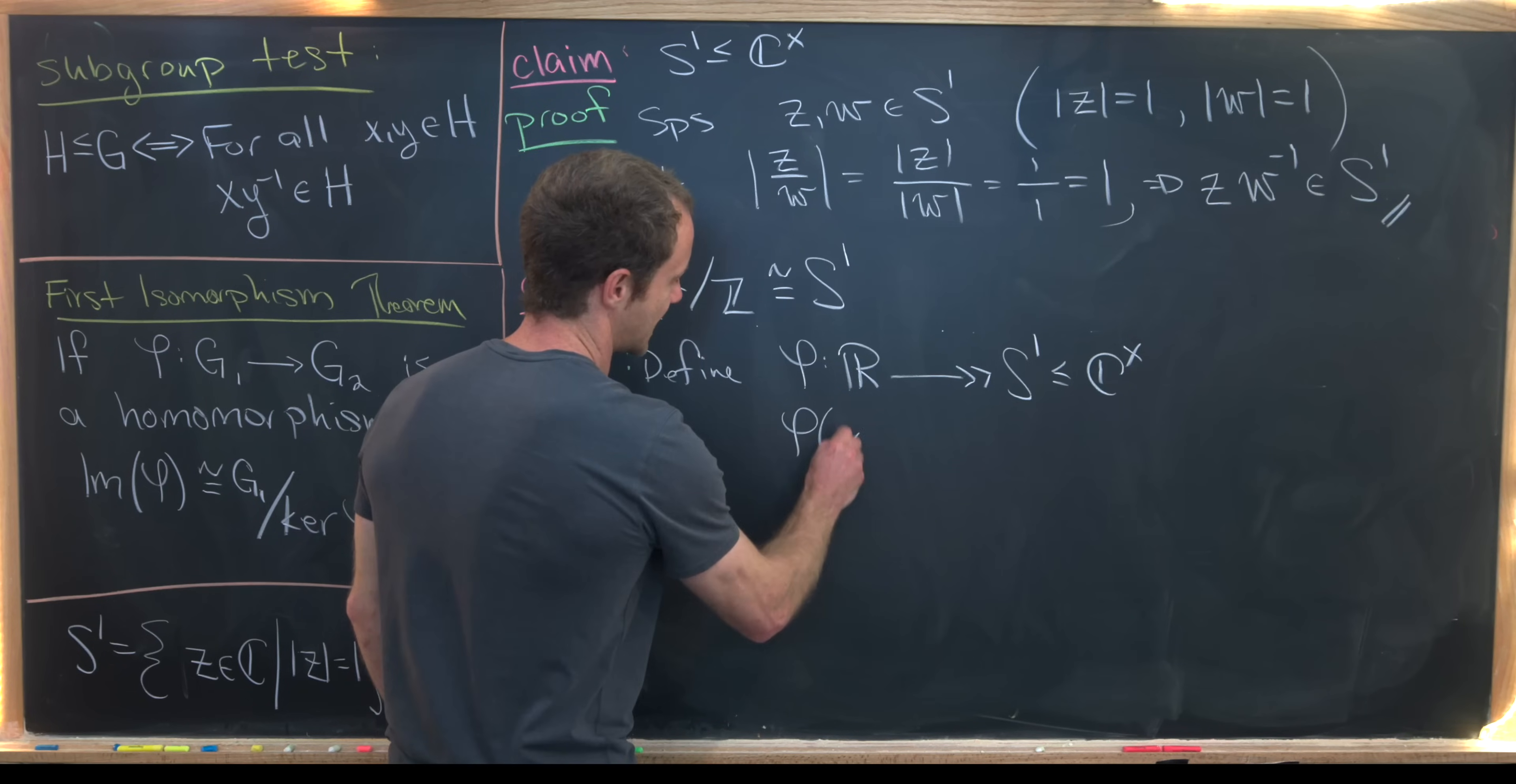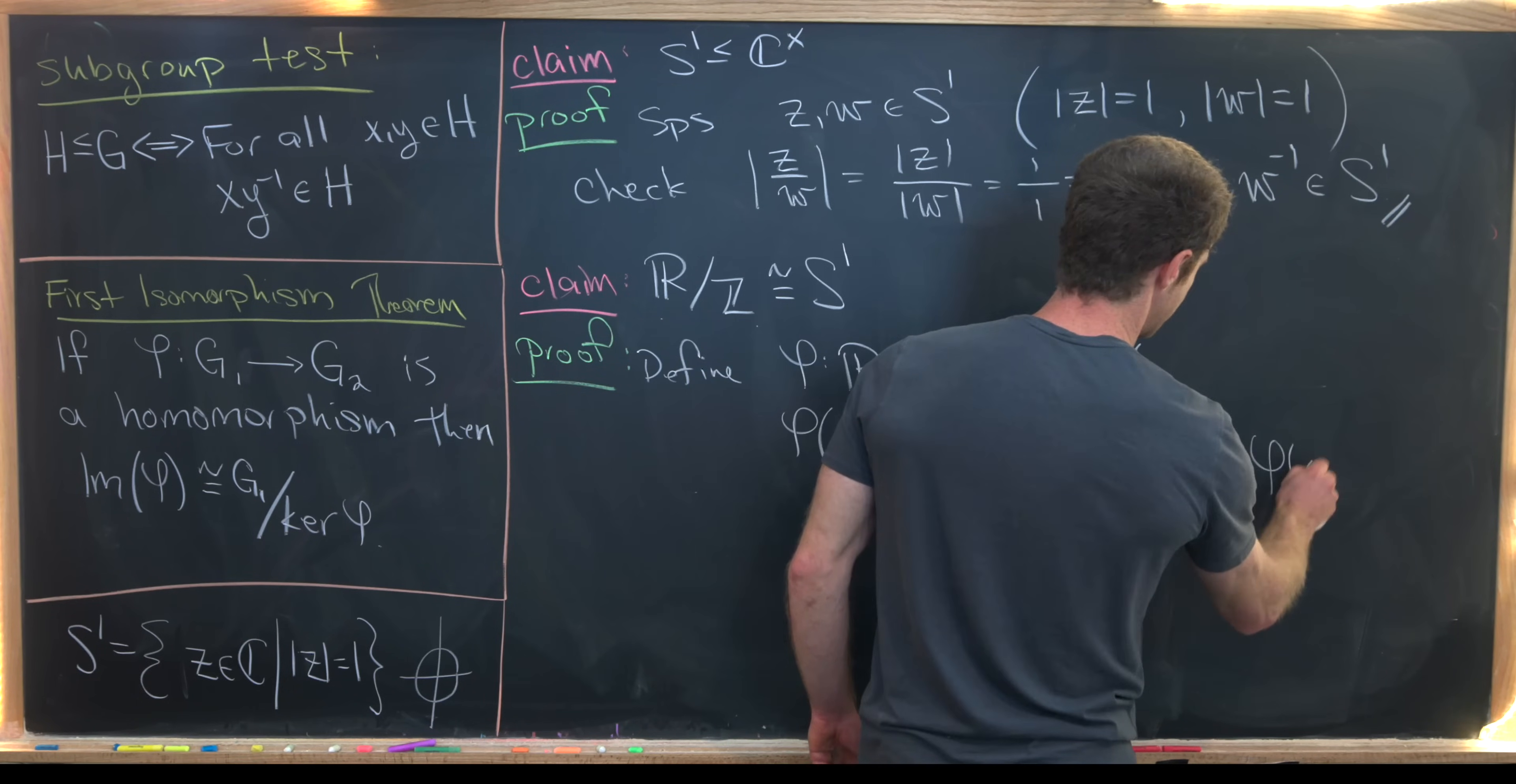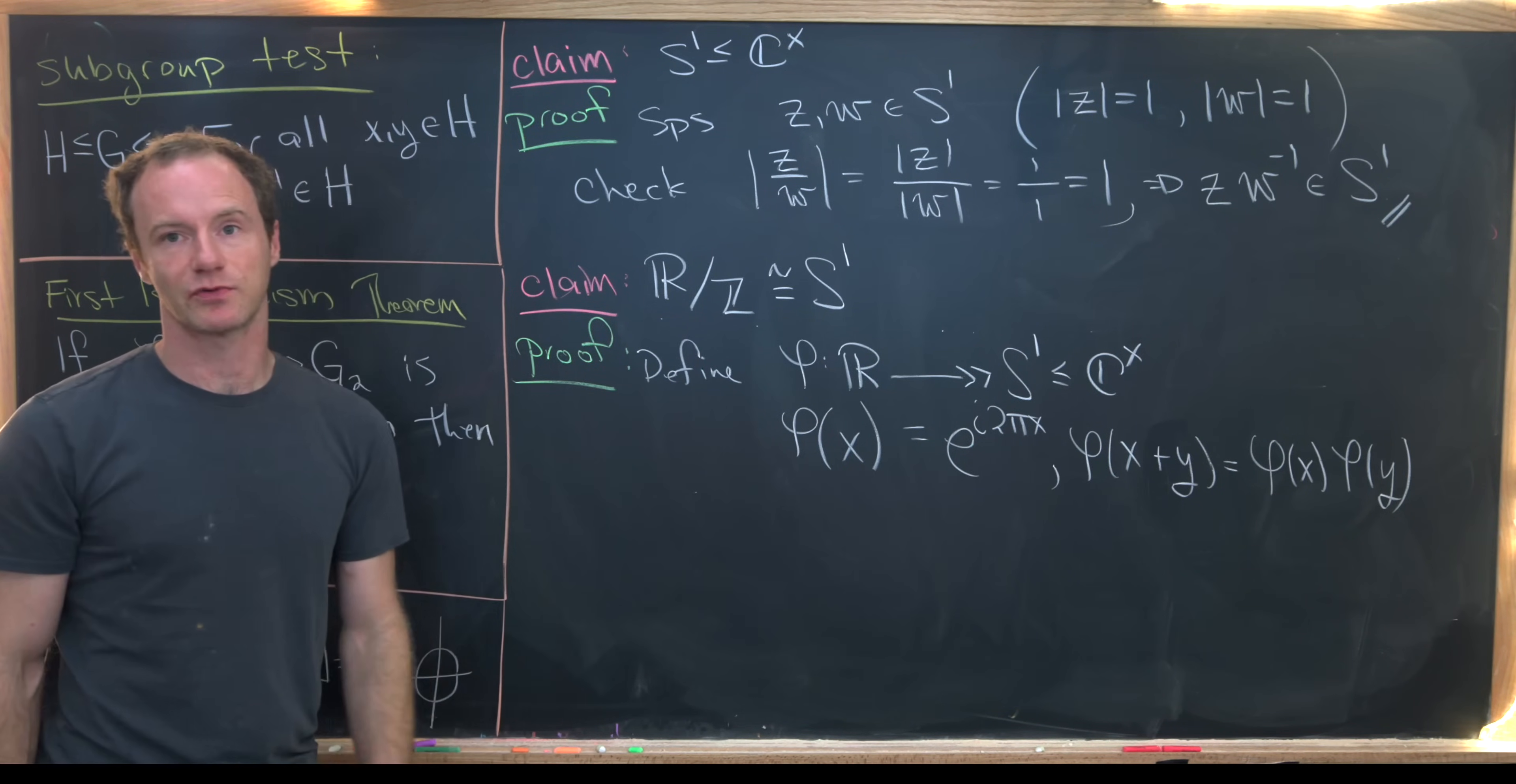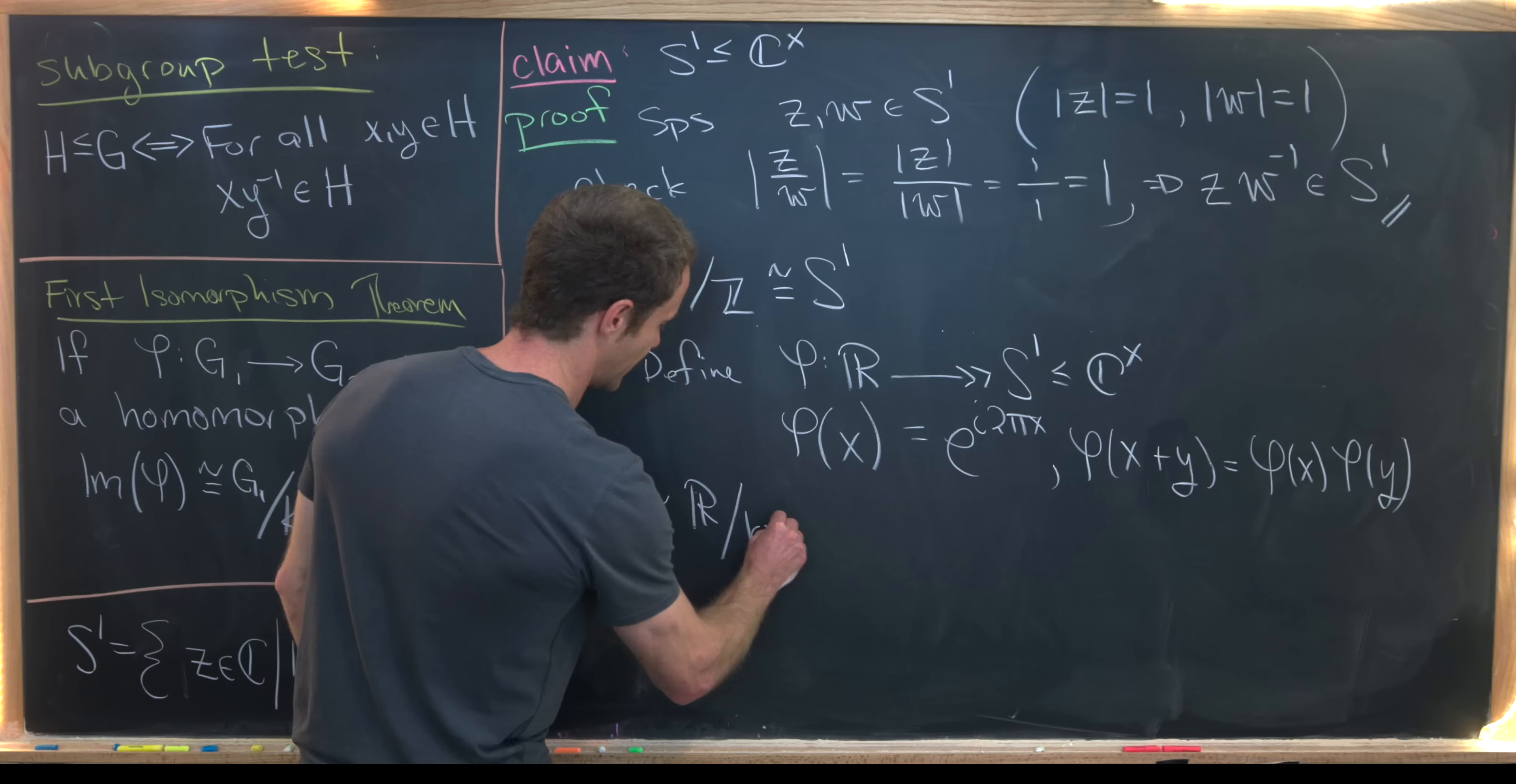Well, we can define it as follows. We'll take the number x and send it to e to the i 2 pi times x. So it's easy to check that this is a homomorphism. Notice phi of x plus y is clearly equal to phi of x times phi of y. So our addition on the left-hand side turns into a multiplication on the right-hand side, which is good because addition is our operation on the left, but multiplication is our operation on the right.